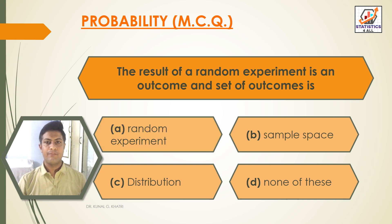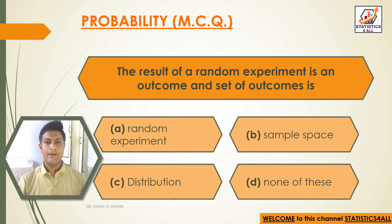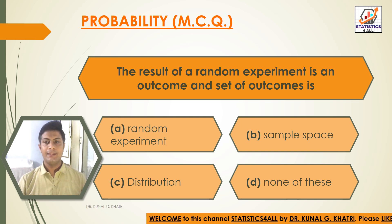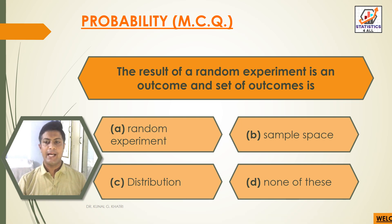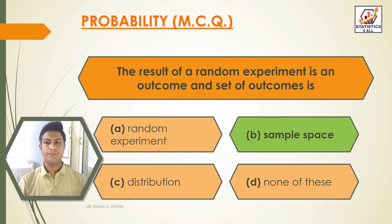Next question: the result of a random experiment is an outcome, and the set of outcomes is — Option A: random experiment. Option B: sample space. Option C: distribution. Option D: none of these. The answer is Option B — sample space.